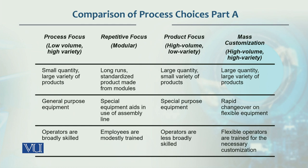In repetitive focus, there are special equipment aids — robots — which are used. This is expensive and capital intensive. In product focus, it is special purpose equipment; for example, only potato chips will be made and the equipment will not be used for anything else.